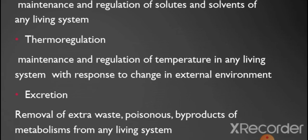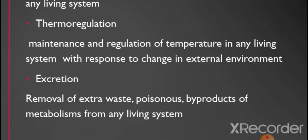Thermoregulation is the second aspect of plant homeostasis. It is the maintenance and regulation of temperature in any living system with response to changes in the external environment. Temperature is very important to survival. There is a limited critical range — from 0°C to 35°C — within which living things can survive. When temperature rises above 35°C, all living organisms, including plants, human beings, and animals, suffer from high temperature stress.